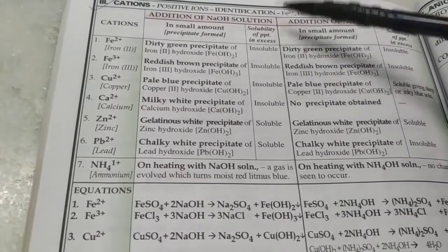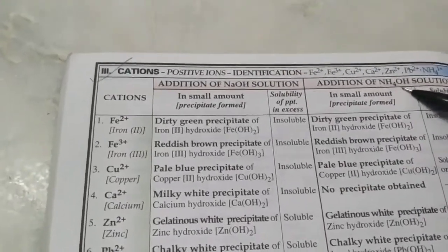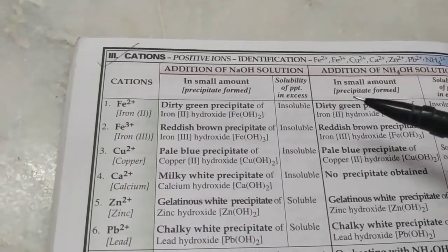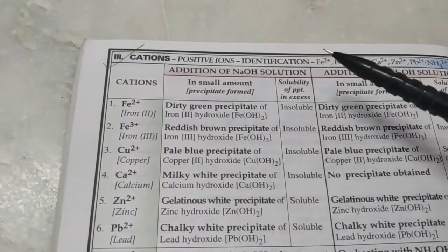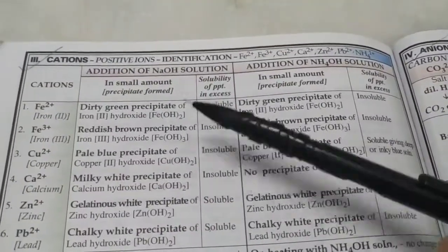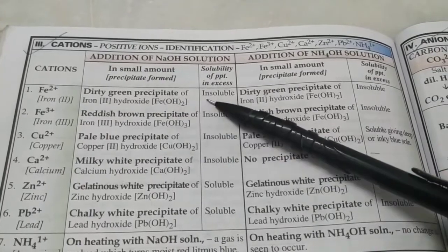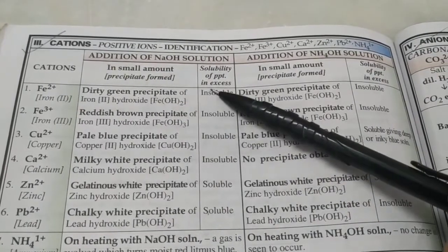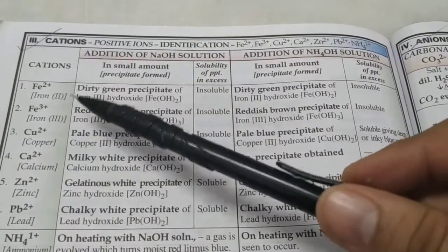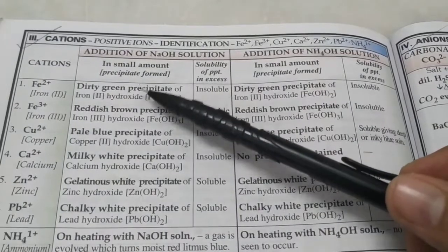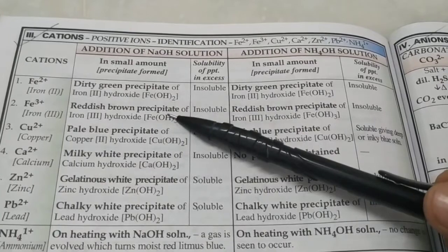We can identify the cation of a salt by addition of an alkali — NaOH or NH4OH — because different salts react to give precipitates of varying colors or solubility. If you add sodium hydroxide to a salt and it gives a dirty green precipitate insoluble even in excess of NaOH, that's a ferrous salt. If you get a reddish brown precipitate insoluble in excess, that is a ferric salt.